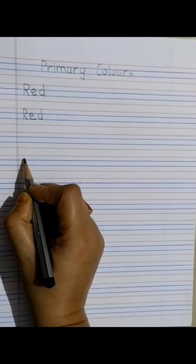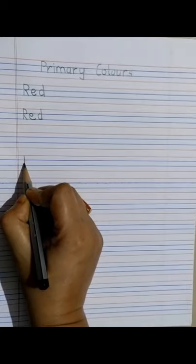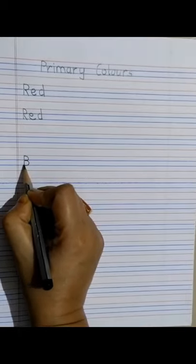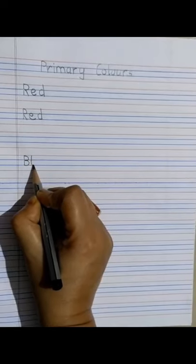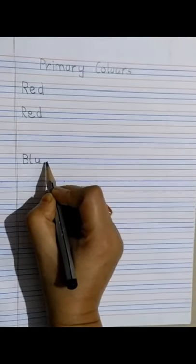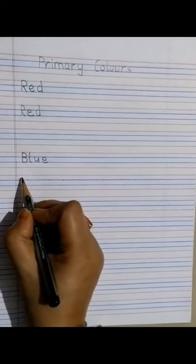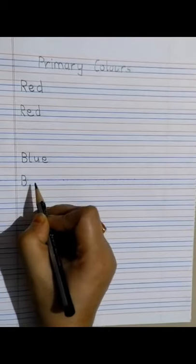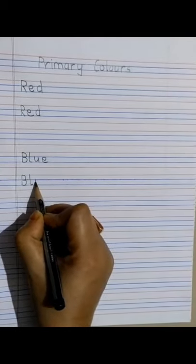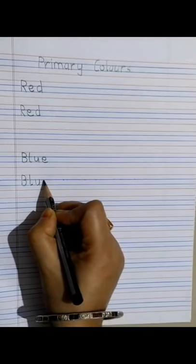Then we will leave one line and go to the next line. We will write blue. A capital B, an L, a U between the blue lines, and then an E. Blue. And this blue we will write once more. A B, an L, a U between the blue lines, and then another E. Blue.